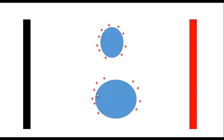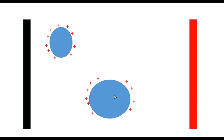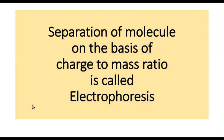Situation three: if we have two particles whose charges are equal, but one has a much greater mass and size than the other — so the charge is the same but their masses are different — then migration will occur in the electric field, but the particle with less mass will migrate faster than the particle with more mass.